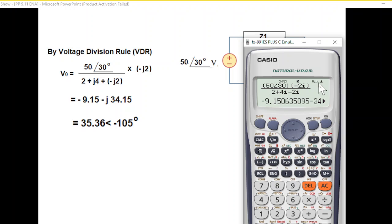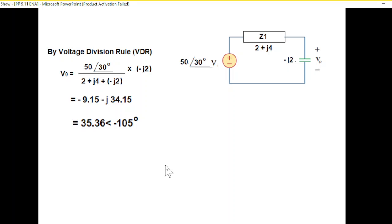We get -9.15 - j34.15, but we want the answer in polar form. Press shift, complex option 2, then r-theta option 3, equal sign. It's in square root form; press SD. Now it's 35.36∠-105°. This is how you calculate by going into complex mode.